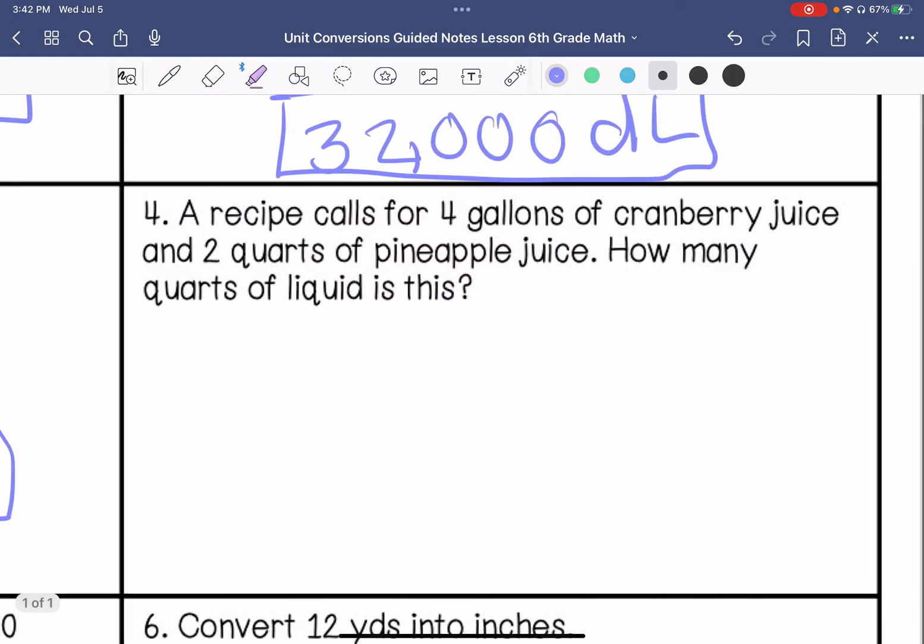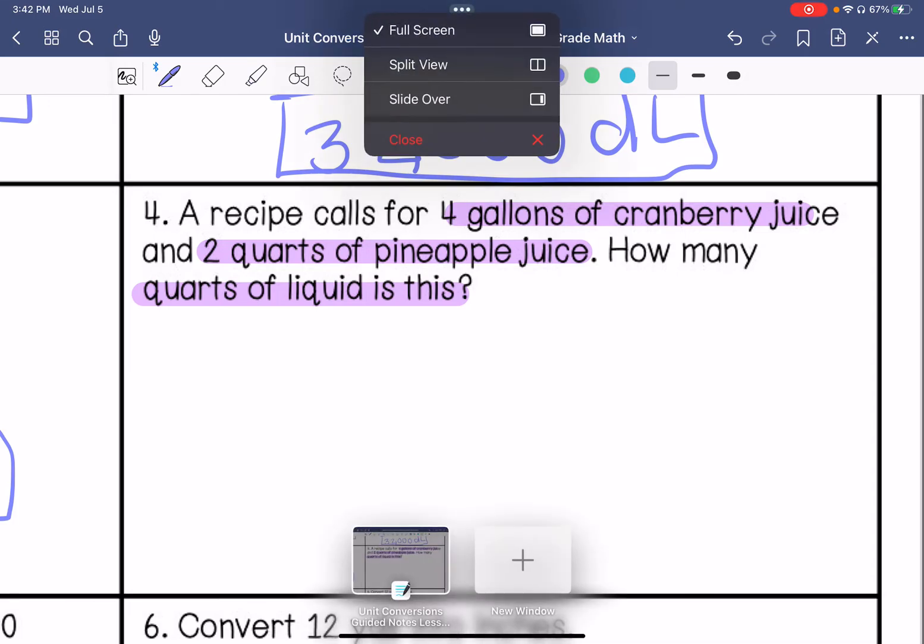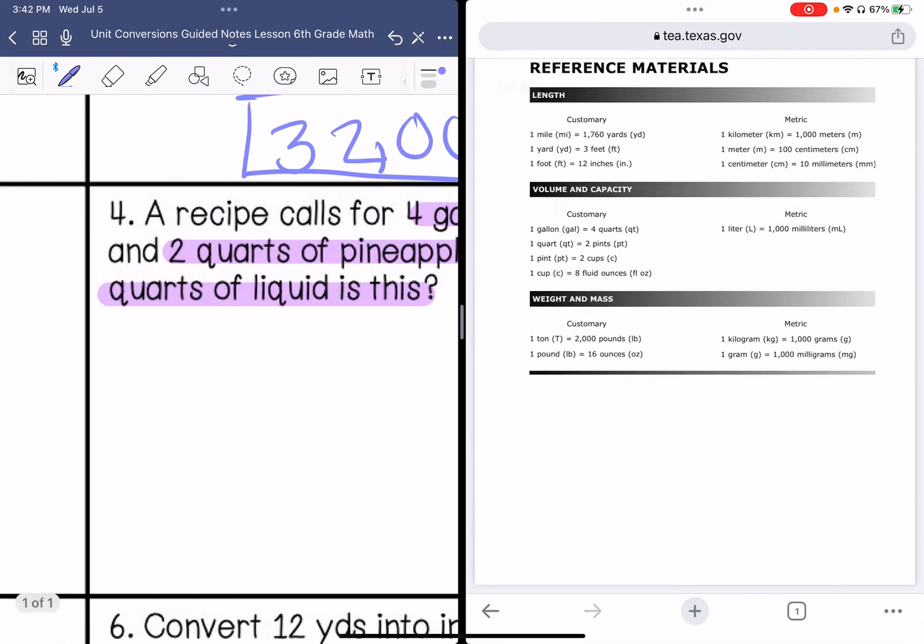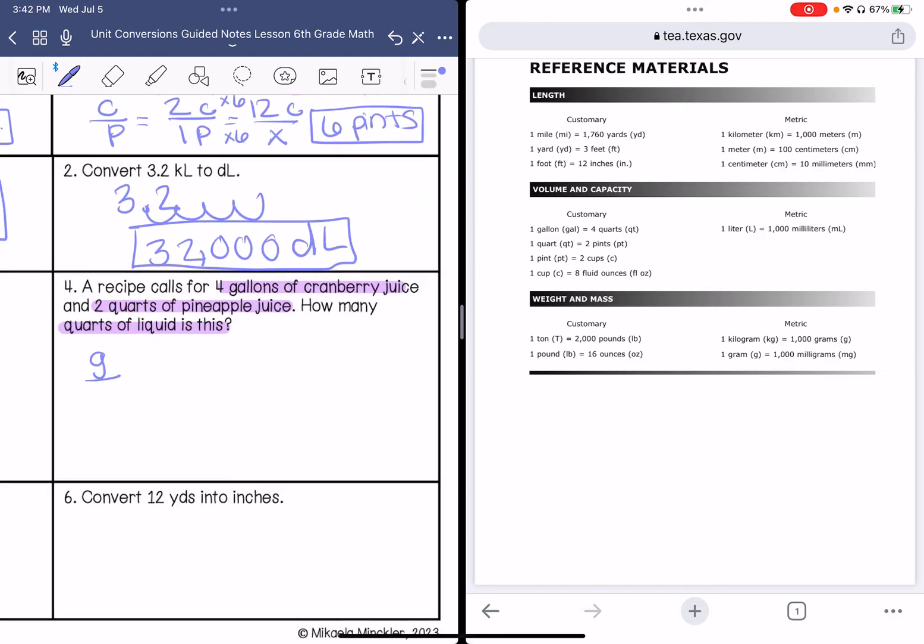A recipe calls for four gallons of cranberry juice and two quarts of pineapple juice. How many quarts of liquid is this? I need to convert them into the same form before I add them. So I have gallons and quarts. My fact is one gallon is four quarts. I have four gallons. Four times four is 16. So this is 16 plus the two quarts. This is 18 quarts total.